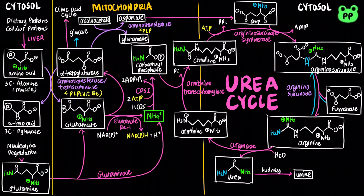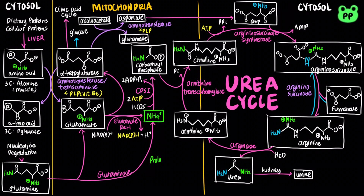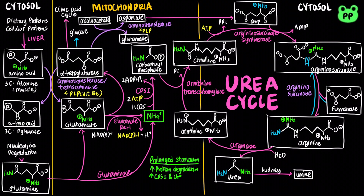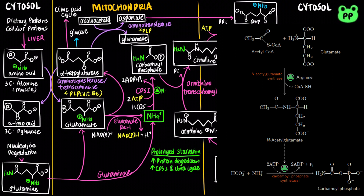The activity of the urea cycle is regulated at two levels. During prolonged starvation, muscle proteins begin to supply much of the organism's metabolic energy, resulting in an increase in the rates of synthesis of CPS1 and the four urea cycle enzymes in the liver. On a shorter time scale, CPS1 can be allosterically activated by N-acetylglutamate, which is synthesized from acetyl-CoA and glutamate by N-acetylglutamate synthase, which is itself activated by arginine.